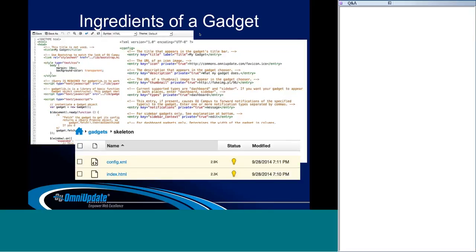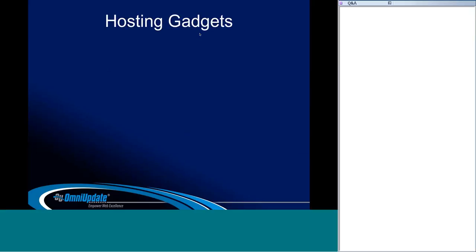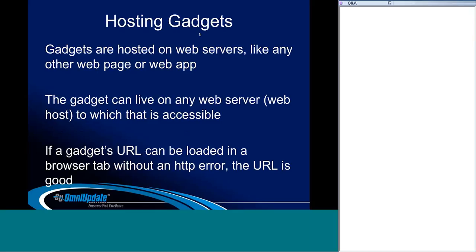Gadgets can be built inside or outside of OU Campus — it doesn't matter as long as it gets published to a server with a valid HTTP URL. If building in OU Campus, you'd build it on the staging server and publish the whole folder to the production server; the folder URL is used to install the gadget. Gadgets are hosted on web servers and can live on any web server as long as you have access to it. The test for a gadget URL is to load it in a browser tab — as long as you don't get an HTTP error, the URL is good.